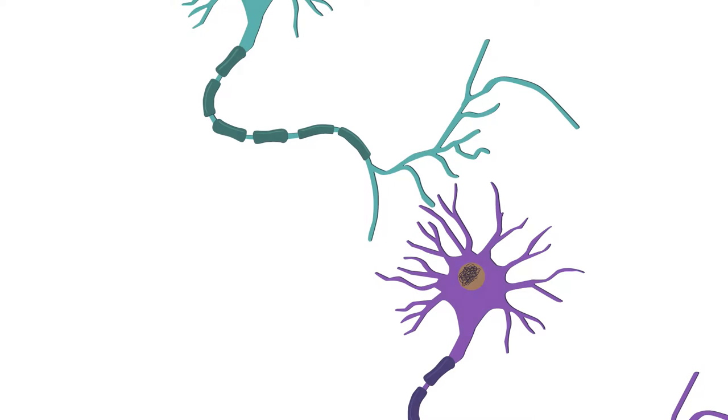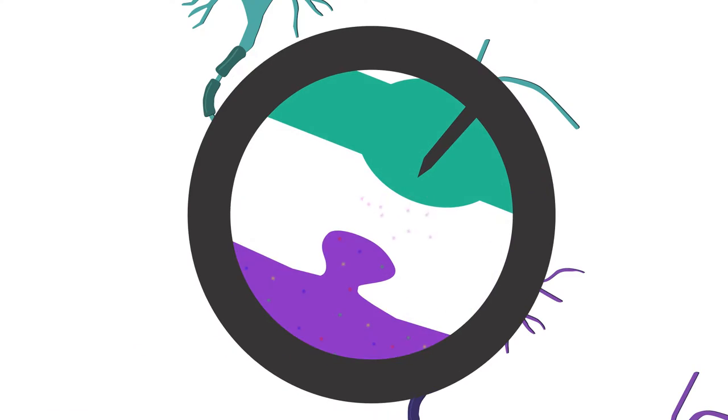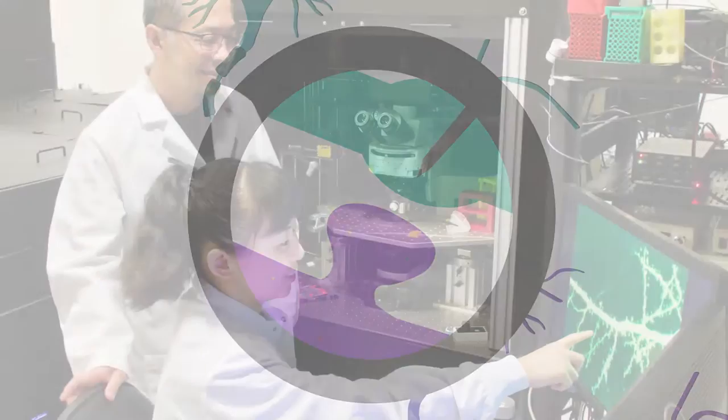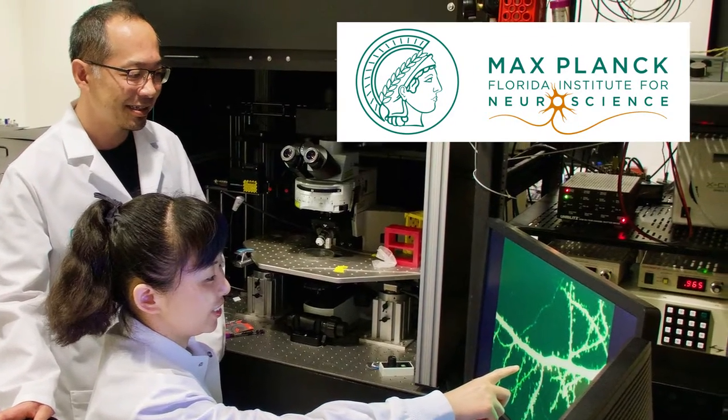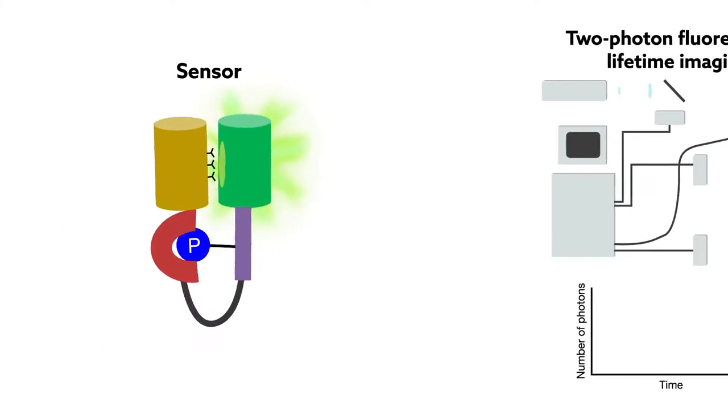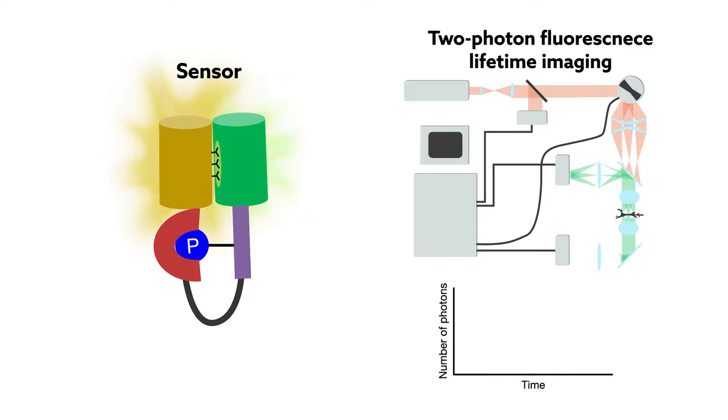Until recently, however, the protein signals that cause these tiny structural changes were too small to measure with available imaging methods. But researchers at the Max Planck Florida Institute for Neuroscience created ultrasensitive sensors and revealed the activity of two of the proteins that write memories into neural circuits in the brain.